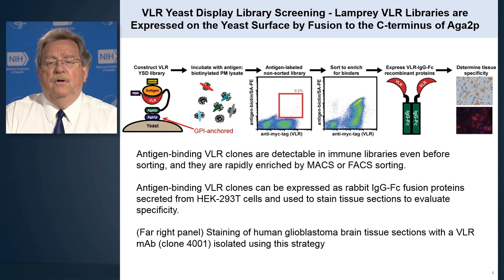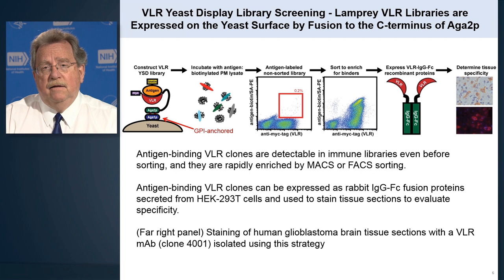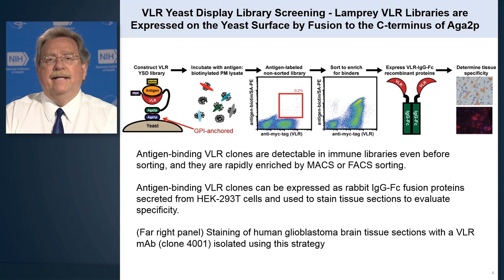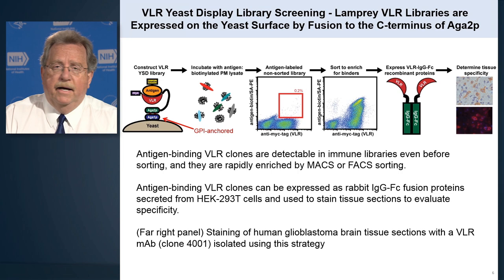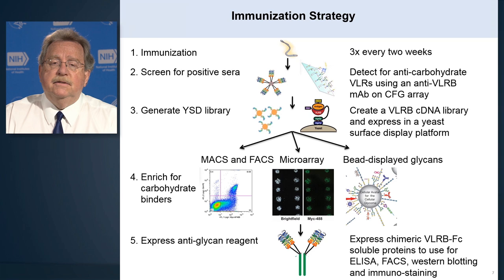We've sequenced all the antibodies. We then express this protein as a recombinant protein — no longer made in yeast, but in a third heterologous system: a mammalian cell that is good at making antibodies. We can take those VLRs attached to a human antibody — called a chimera — and screen them on tissue to find out what they bind to and in what tissues.